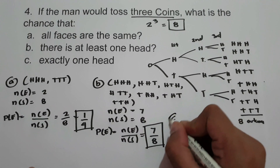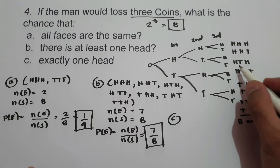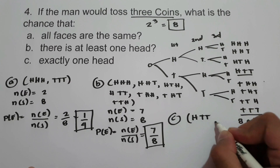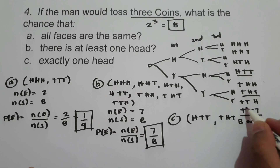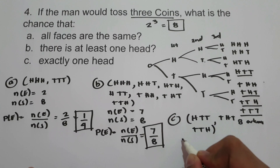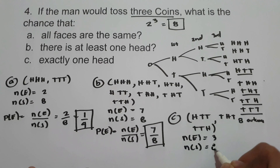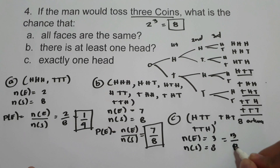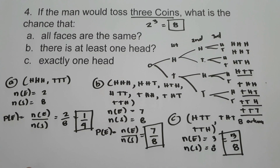On letter C, exactly one head — the outcomes are: HTT, THT, and TTH. So the number of favorable outcomes is 3, and the number of possible outcomes is 8. The probability is 3 over 8. I hope you will learn from this lesson. Thank you so much for watching, and God bless us all.